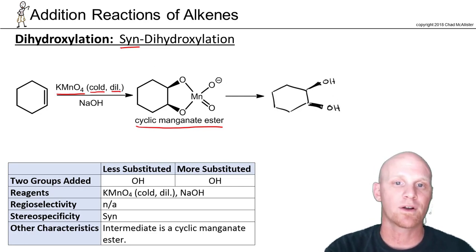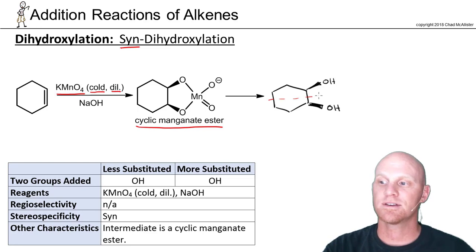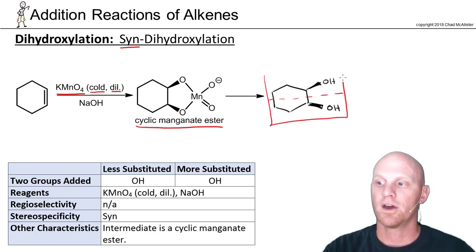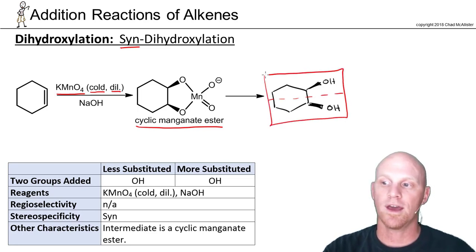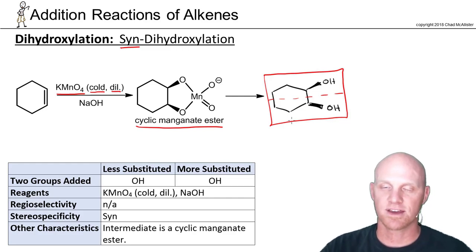As we pointed out in the last example, the same applies here: this is a meso compound. So rather than the expected two products, you're going to get one achiral product — one meso compound, as is the case here.